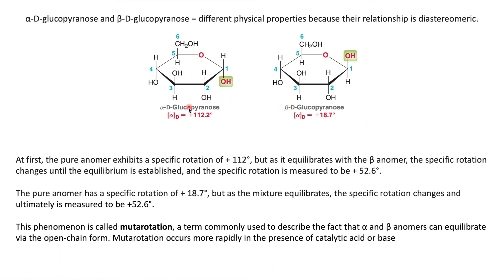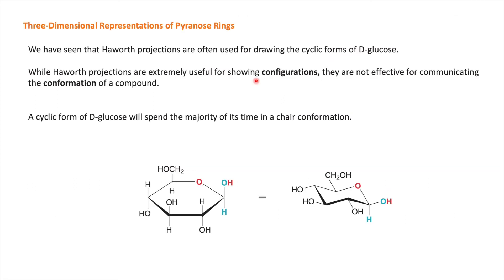So alpha-D-glucopyranose converts into beta-D and beta-D converts into alpha-D. This change in rotation is called mutarotation, and it occurs via the open chain form. For example, alpha-D-glucopyranose opens and converts to the open chain form, then the open chain form converts into beta-D-glucopyranose. This process occurs rapidly in the presence of catalytic acid or base.